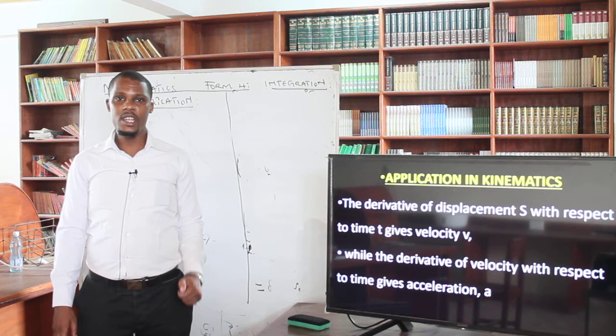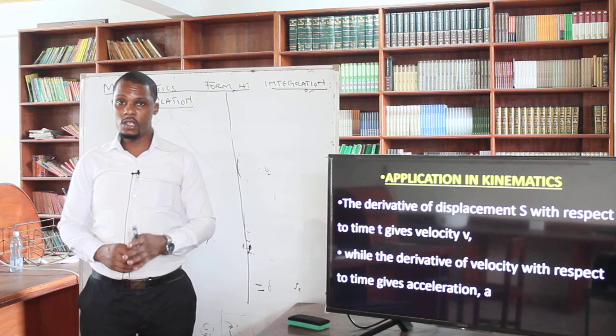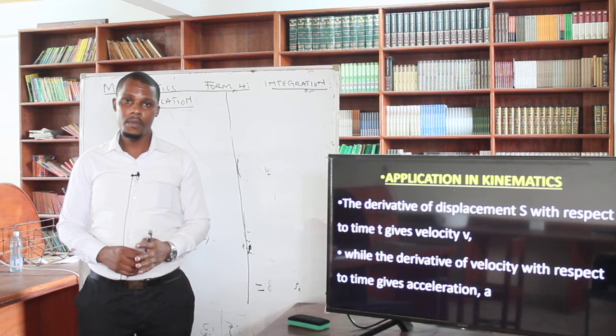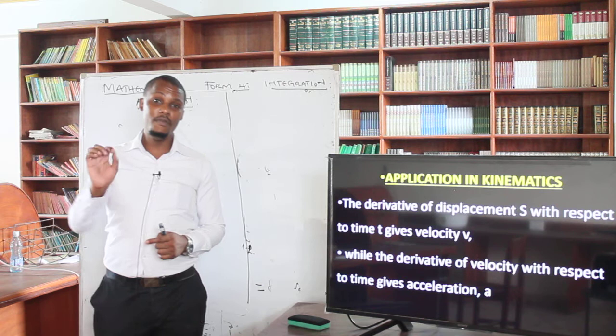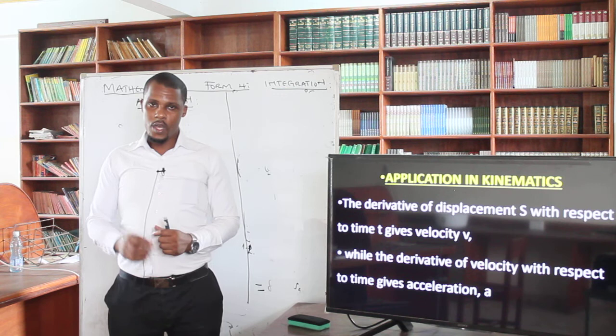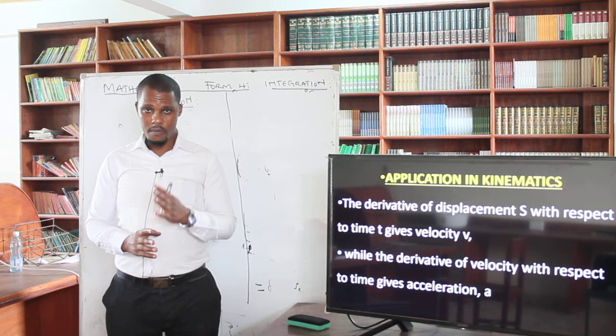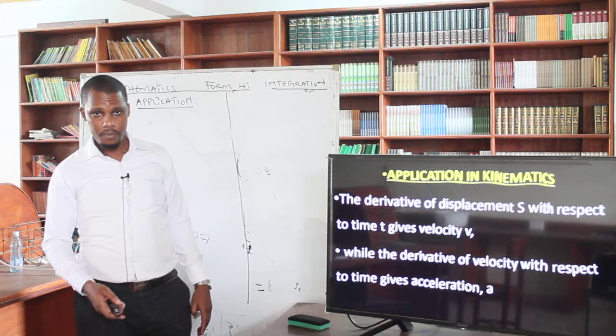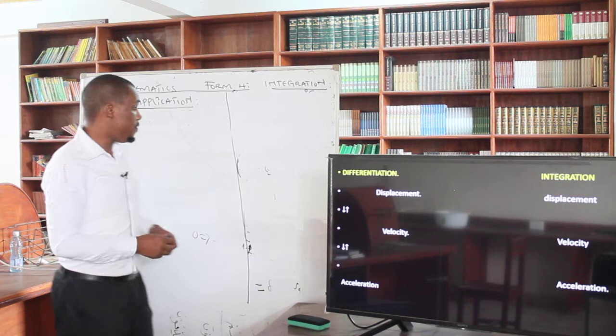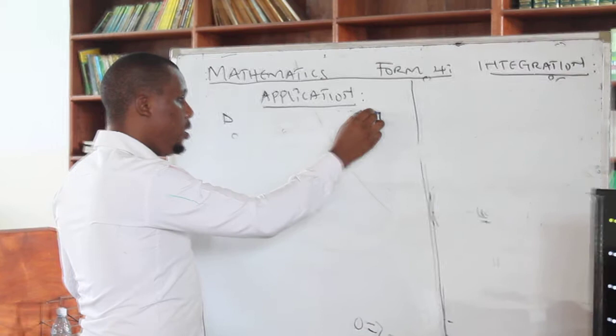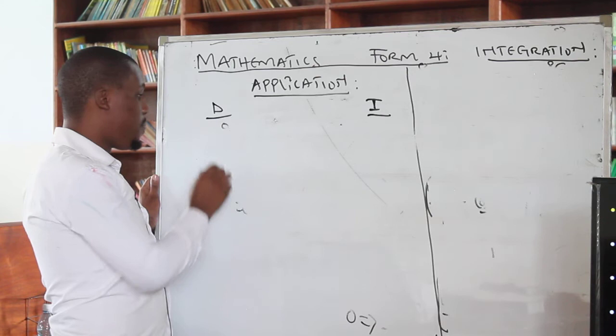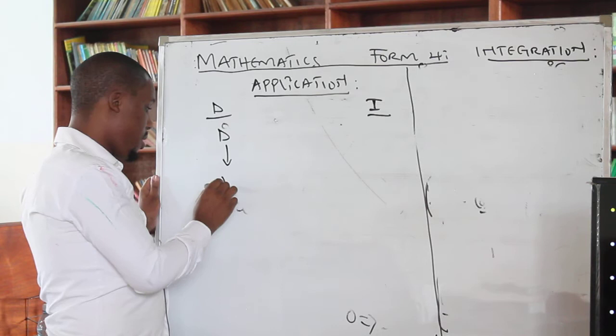The derivative of displacement with respect to time gives velocity. So if you differentiate a displacement equation with respect to time, you obtain velocity. Then the derivative of velocity with respect to time gives acceleration. So differentiating again gives acceleration. In differentiation, you move from displacement down to velocity, then down to acceleration.